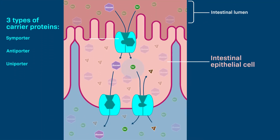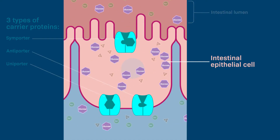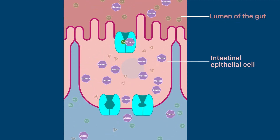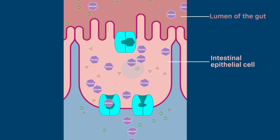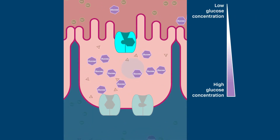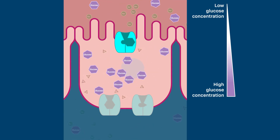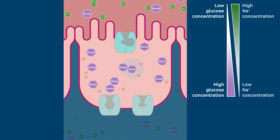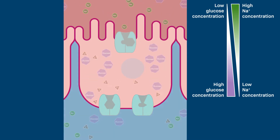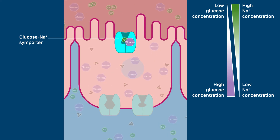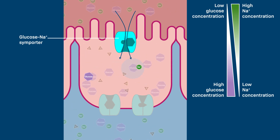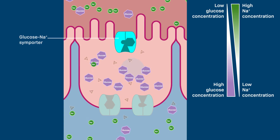Let's look at an example of how a cell uses these three types of carrier proteins. When we eat food, it gets broken down in our stomach and then absorbed in the small intestine. Nutrients like glucose must first enter the intestinal cells lining the gut before they can pass into blood vessels. Glucose is typically higher in concentration inside the cells than in the lumen of the gut, so transporting glucose into the cell requires energy. The sodium concentration gradient is reversed — there is much more sodium outside the cell than inside — allowing a glucose-sodium symporter to use the energy stored in the sodium gradient to pump glucose into the cell.